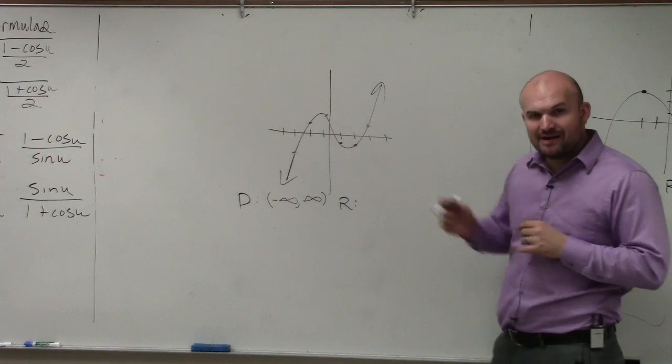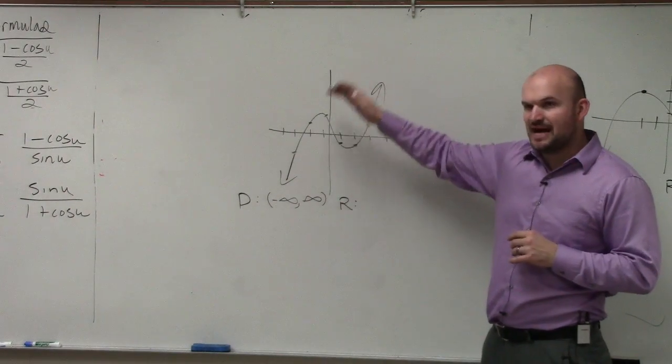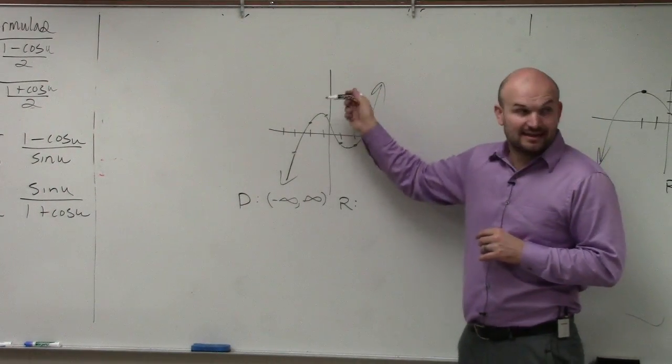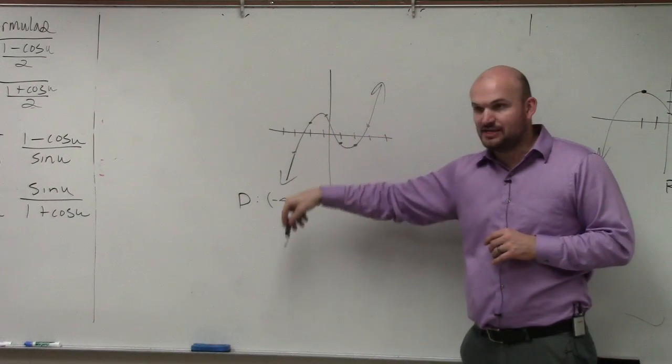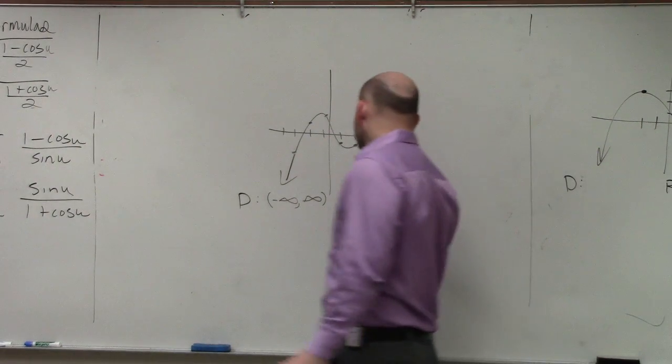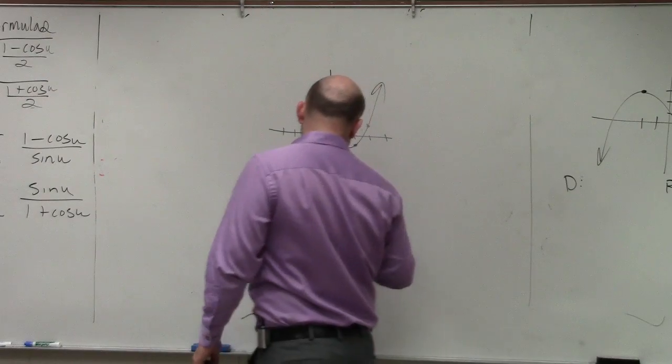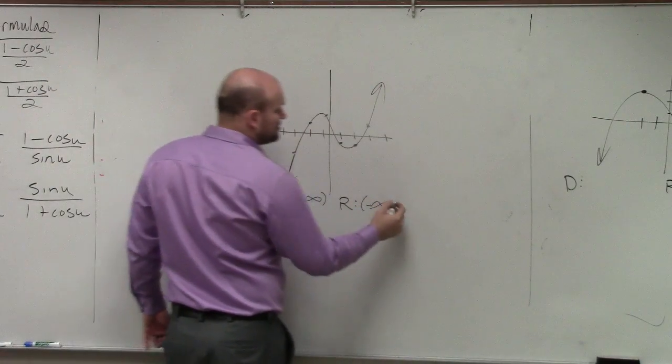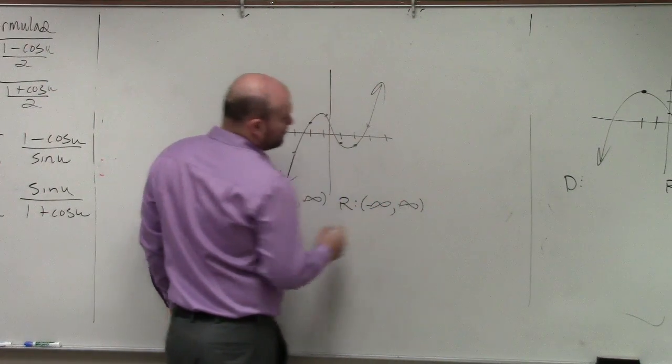So the range is the set of all y values. Basically, I'm looking up and down. Well, again, looking at the end behavior, this graph is going to continue going down. So the range is going to be from negative infinity, as far as all the way up, which would be positive infinity.